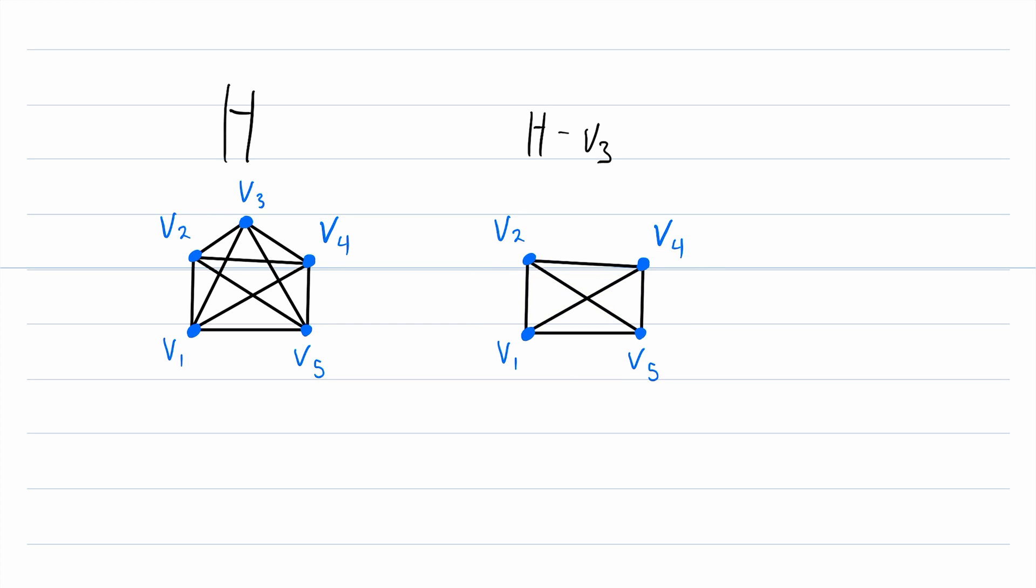If you continued to play around with complete graphs, you would notice that any time you delete a vertex from a complete graph, the resulting graph is also a complete graph. And that's a pretty easy statement to prove. So if you want to get your feet wet with some graph theory proofs, you could try proving that. You might also notice here that when we subtracted the vertex V3 from H, we still have the same number of components, so V3 is not a cut vertex.